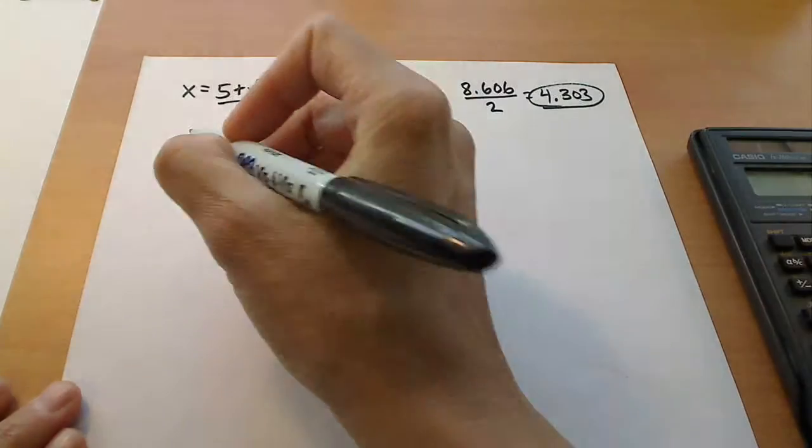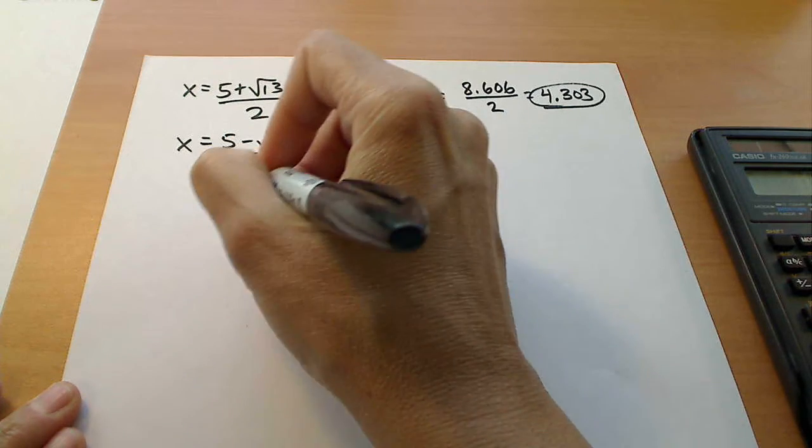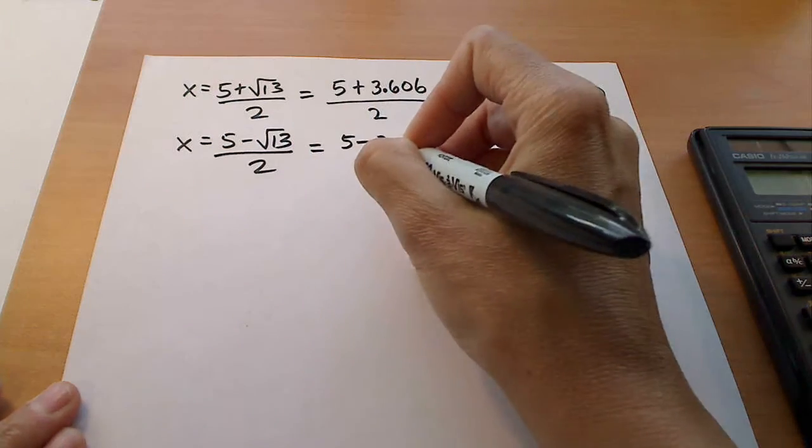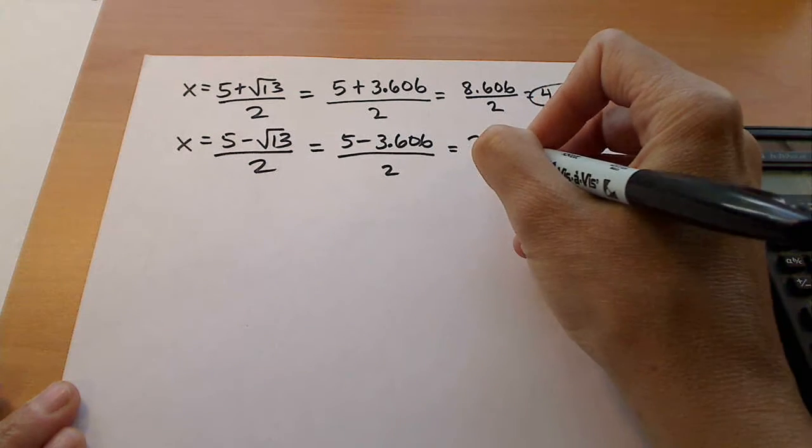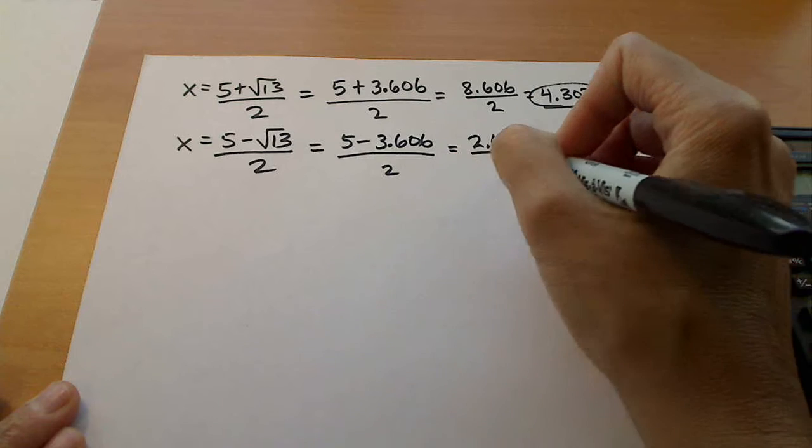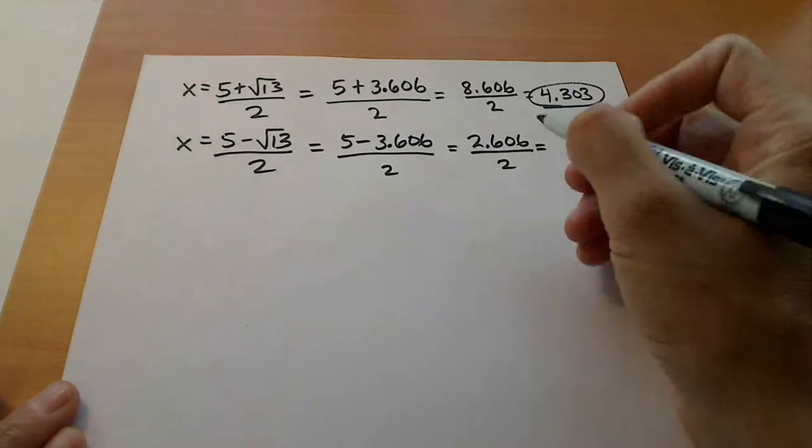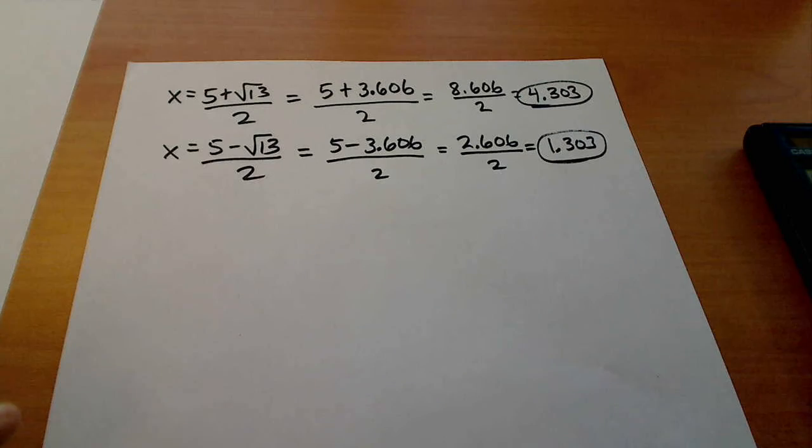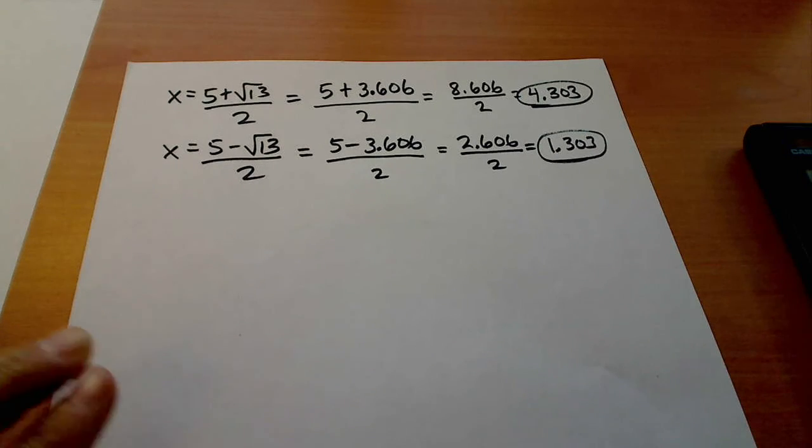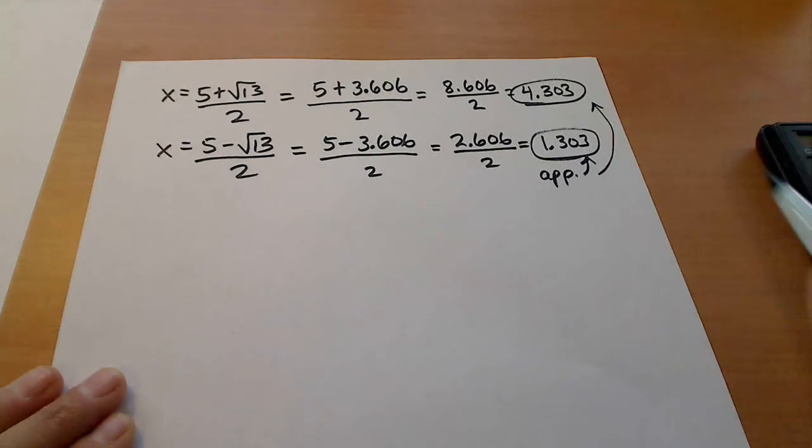And then the second one is doing the same thing. We just have a minus sign out front. So this is 5 minus 3.606 over 2, which is 2.606 over 2, which when we divide by 2 there, we're going to get 1.303. So those would be the approximate answers for this particular problem.